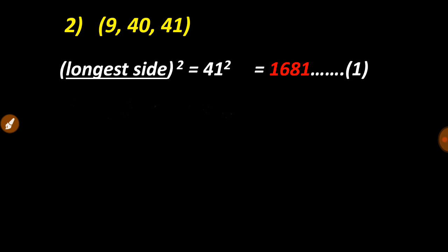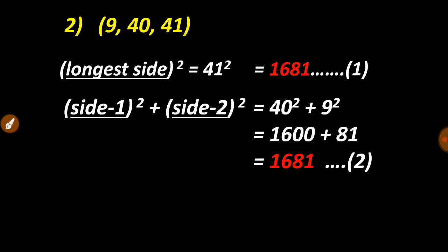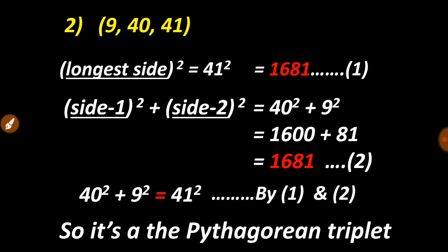Now the second step includes sum of square of remaining two sides, so we have side-1 square plus side-2 square as 9² and 40². After adding them, again we get the same number. If these two numbers are same, then we can say this is nothing but Pythagorean triplet.